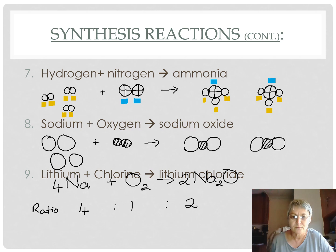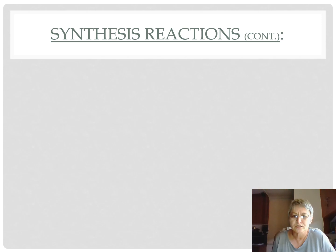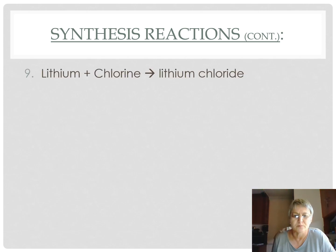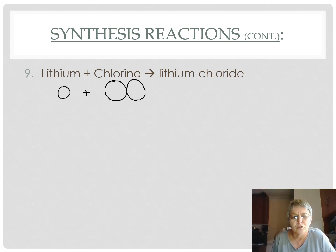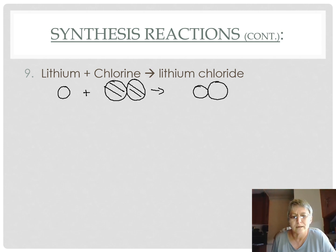The last example of synthesis looks at lithium reacting with chlorine. Lithium atoms are smaller than chlorine atoms because they're in period two where chlorine is in period three. Chlorine is also diatomic, and lithium and chlorine join in the ratio of one atom lithium to one atom chlorine.